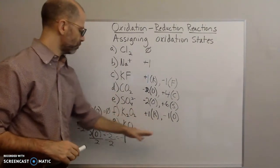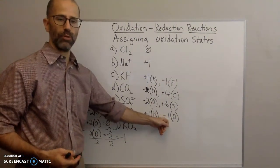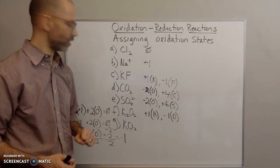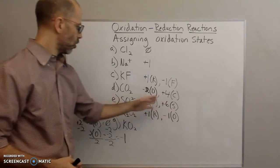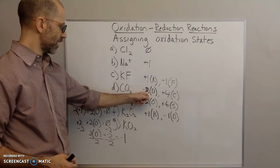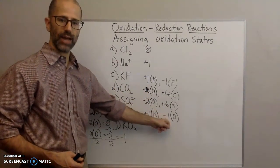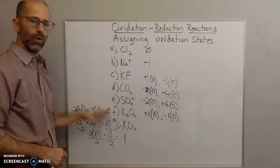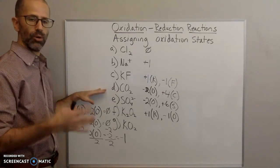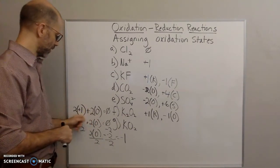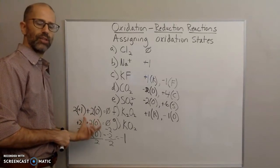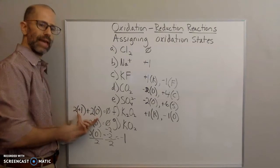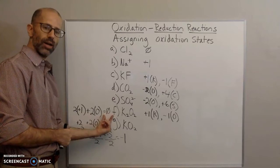This is why it's important to follow the rules. If you start with oxygen first, you might give it a negative two oxidation state and get the wrong answer for potassium. Notice that here oxygen has a negative two oxidation state in CO₂, but here in K₂O₂ it has negative one. So when you get to the last element in a compound, you can't just assume its typical oxidation state — you have to set up the equation. The sum of all oxidation states must equal the overall charge: zero if neutral, negative two if the charge is negative two.